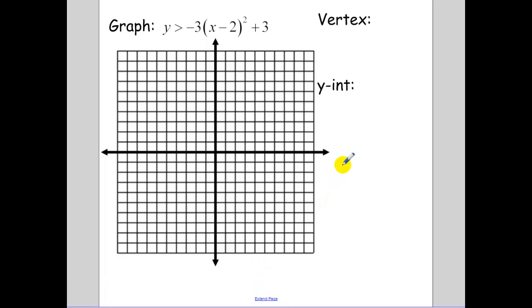Next example. Our vertex, now this is in our vertex form, so our vertex is 2, 3. I'm going to put that point down. The y-intercept, you make x, 0. So I have a negative 12 plus 3, it's going to be a negative 9 symmetry point.